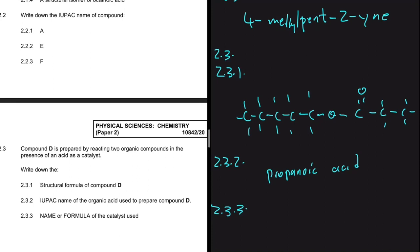For 2.3.3, we need the formula of the catalyst used. In esterification, we always use H₂SO₄ — sulfuric acid — as the catalyst.